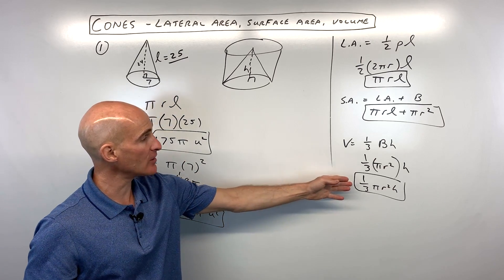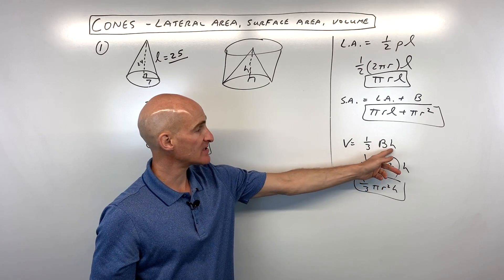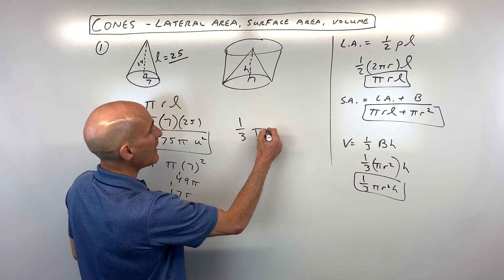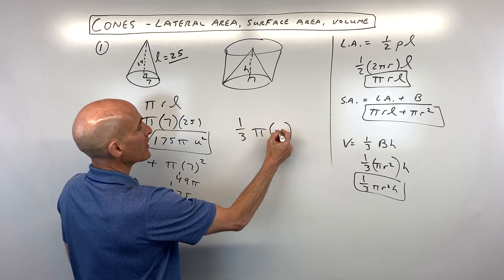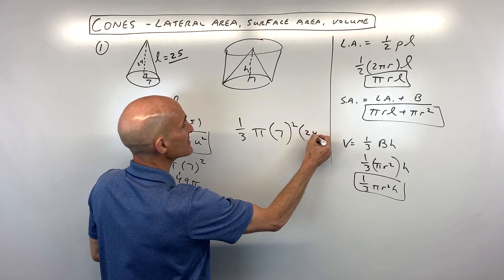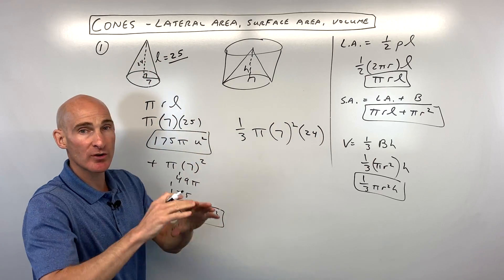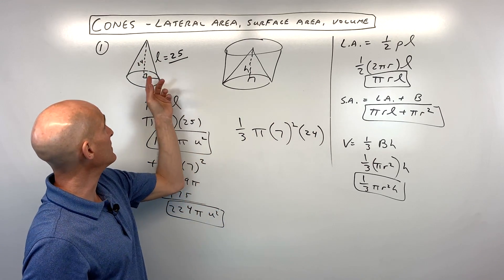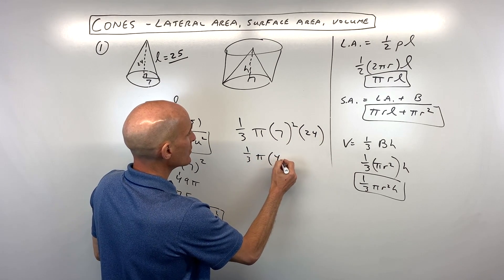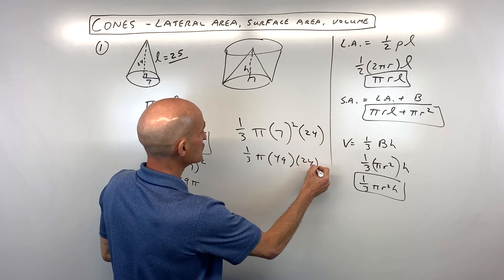And then if we want to find the volume, we just have to do the area of the base times the height divided by 3, or times one-third. Or you can use the one-third π radius squared times the height. And you want that perpendicular height, not the slant height. The slant height is used when you're finding the lateral area, not the volume. So let's see here, we have one-third.